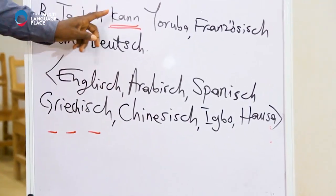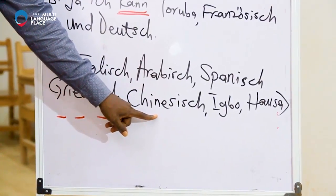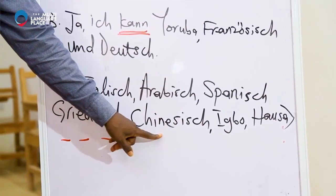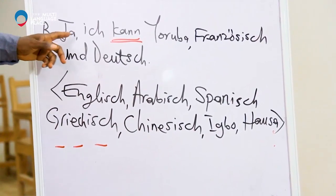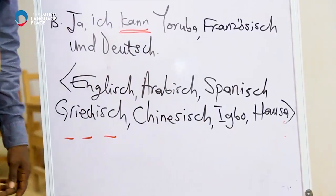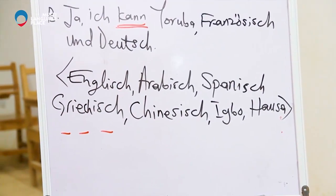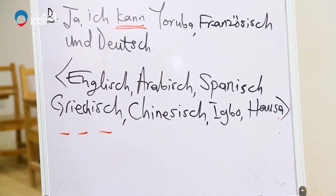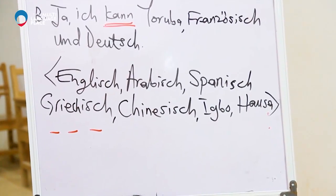Then: 'Ja, ich kann Chinesisch' — I can speak and I understand Chinese. 'Ja, ich kann Chinesisch.' Then: 'Ja, ich kann Igbo' — I understand and I can speak Igbo. 'Ja, ich kann Igbo.' And the last one: 'Ja, ich kann Hausa' — I understand and I can speak Hausa. 'Ja, ich kann Hausa.'